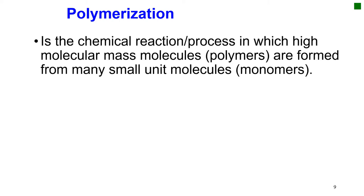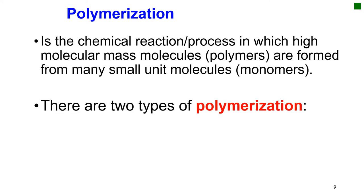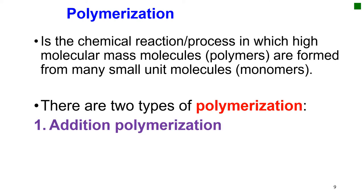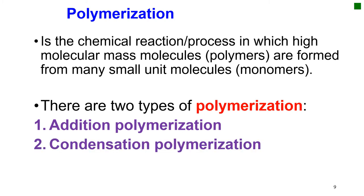After understanding what a polymer and monomer are, let's now see what polymerization is. Polymerization is a chemical process in which a polymer is formed. In this process, many small molecules combine together through a chemical process and result in a large molecule known as a polymer. There are two types of polymerization: one is addition polymerization, and another is condensation polymerization. We are going to see each of them in detail.